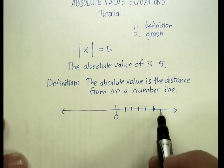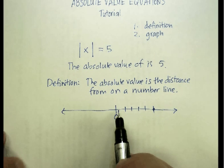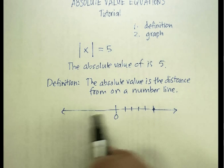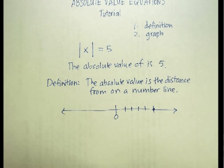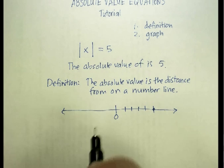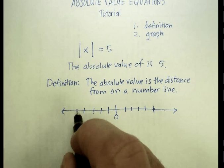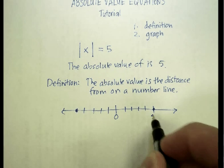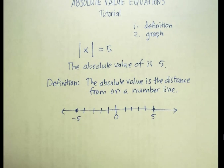So the absolute value is 5 units away. But you'll notice that there's another point on the number line that's also 5 units away from zero: 1, 2, 3, 4, 5. And that number is negative 5.